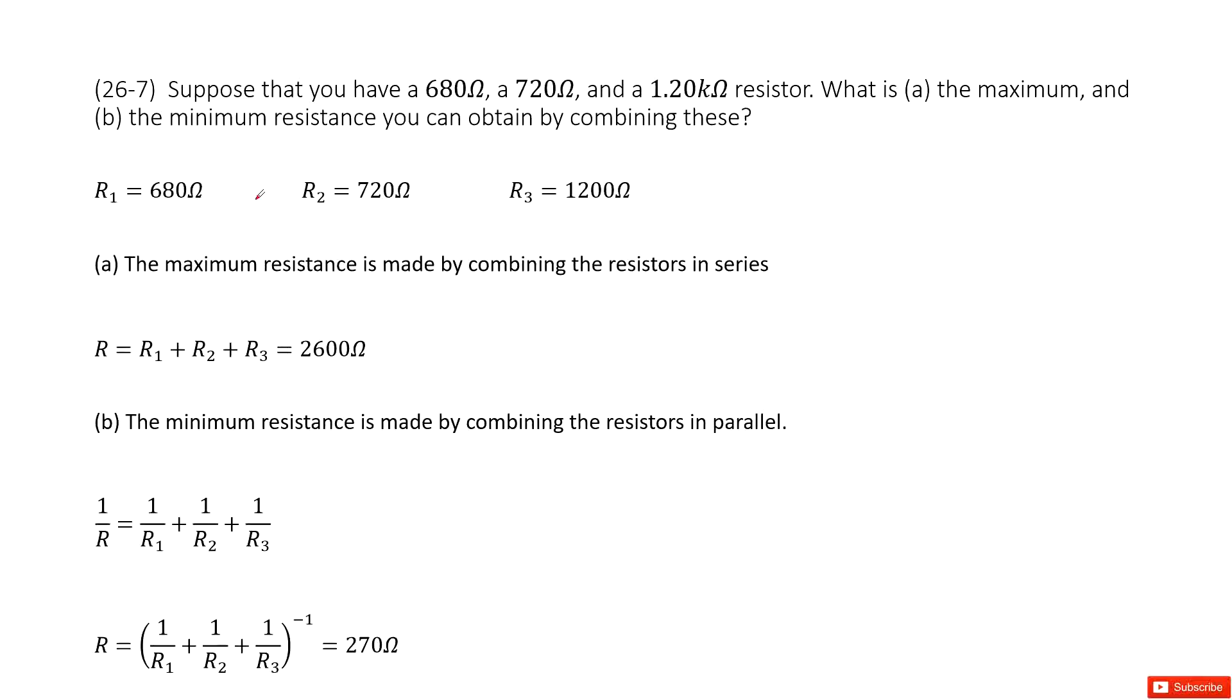We have three resistances: R1, R2, R3. R1 is 680 ohms, R2 is 720 ohms, R3 is 1,200 ohms.